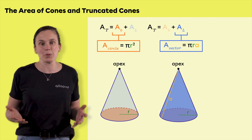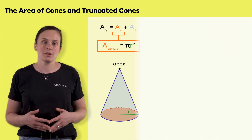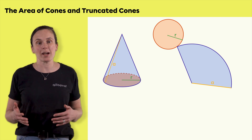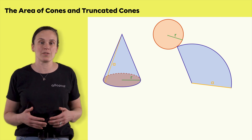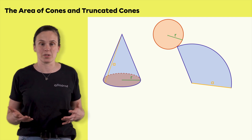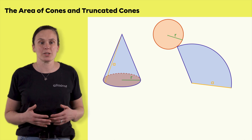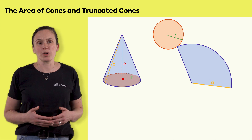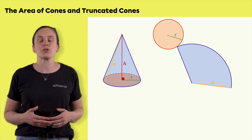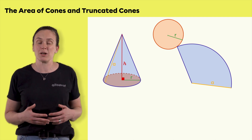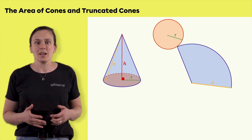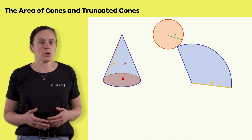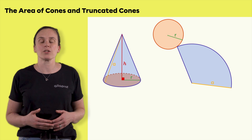To explain why, we will inspect the net of a cone. The cone's apothem is the distance between the apex and any point on the outline of the base, which is the circumference of the circle. The apothem is represented by the letter A. The height of a cone is the distance from the apex to the center of the base, measured perpendicularly. It is important not to confuse it with the cone's apothem.